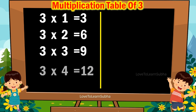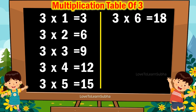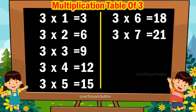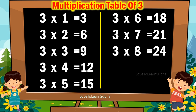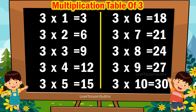3 6s are 18, 3 7s are 21, 3 8s are 24, 3 9s are 27.